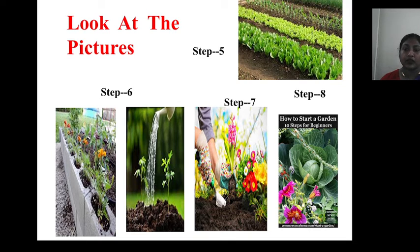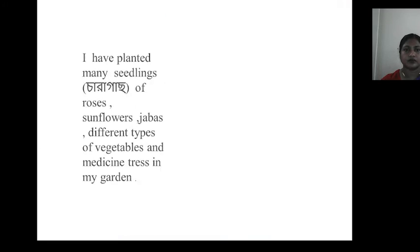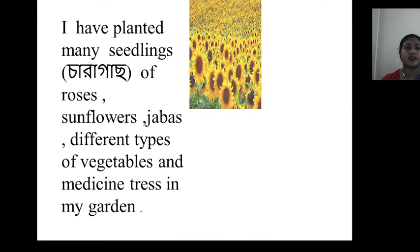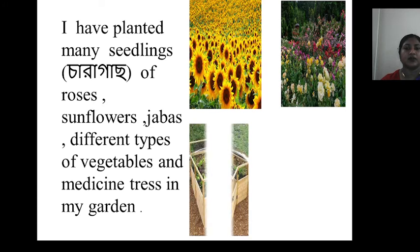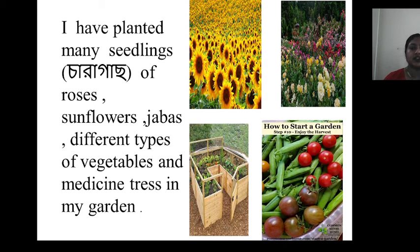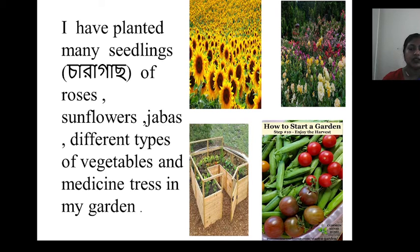So if we follow these steps, we can get flowers, fruits, vegetables, and so on. I have planted many seedlings of roses, sunflowers, zinnias, different types of vegetables and medicinal trees in my garden.